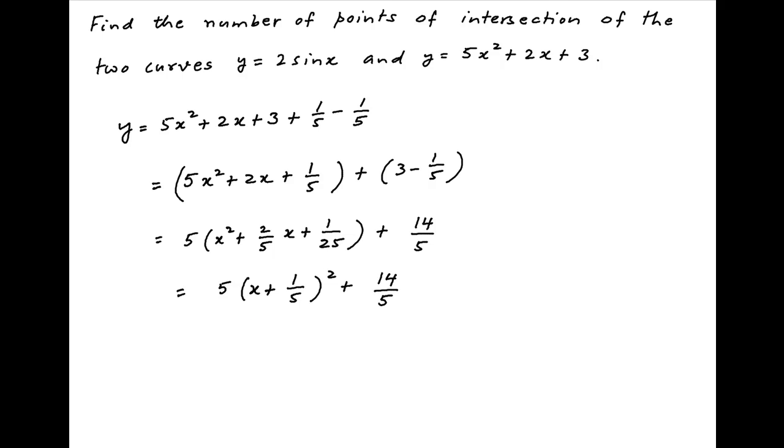Notice that 5 times x plus 1 upon 5 whole squared is always greater than or equal to 0, and 14 upon 5 is equal to 2.8. Therefore this whole expression is strictly greater than 2.